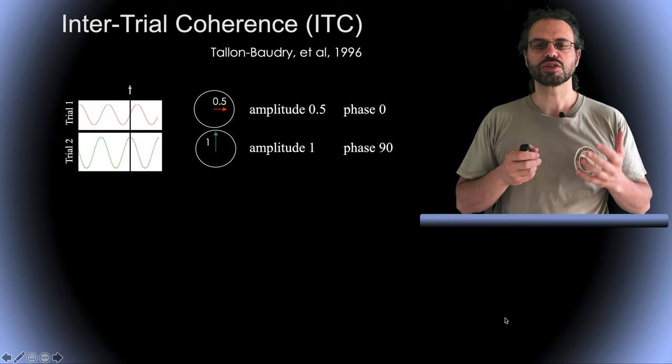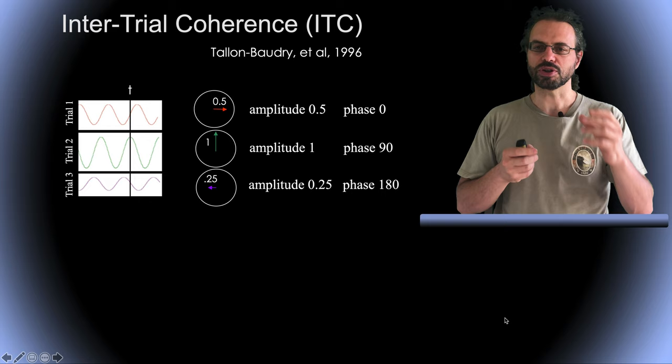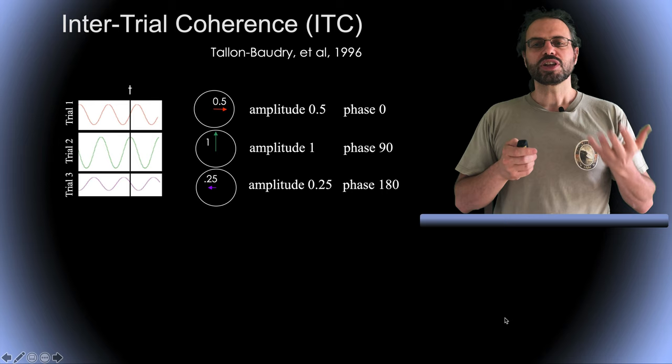Now let's have a look at another trial. The green trial has a larger amplitude compared to the red and the phase is shifted by 90 degrees. The third purple trial has a smaller amplitude compared to the red and is shifted by 180 degrees.